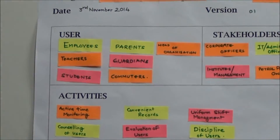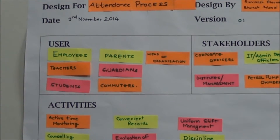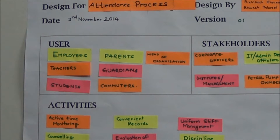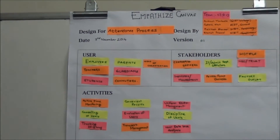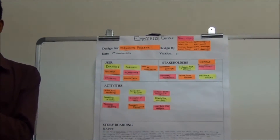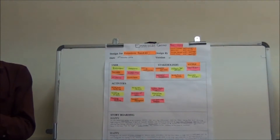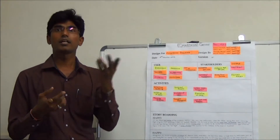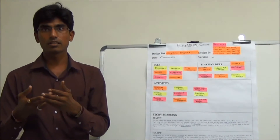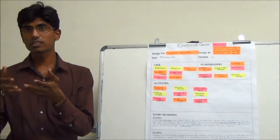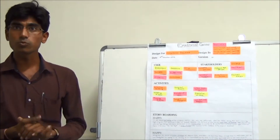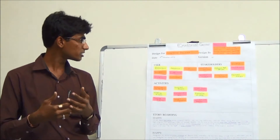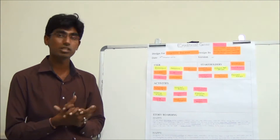Who can use this attendance system? For example, if we consider technical institutes or universities, then students, faculty members, and trustees can use this attendance process. If we consider industries, then employees can use it. If we consider railway stations, then police can use this attendance process. So there are various places where we can use this attendance process.